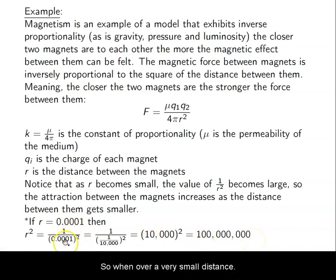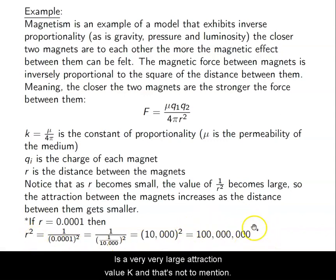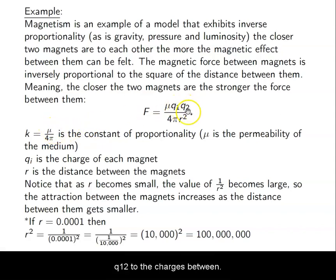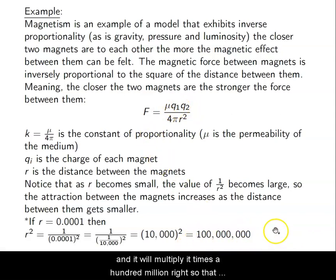So 1 over a very small distance squared is a very, very large attraction value. And that's not to mention including the values of the proportionality constant or the q1, q2, the charges between them. But having a very small number on here will take whatever this k is and whatever this q1 times q2 is, and it will multiply it times 100 million. So that will be a very, very large value of attractive force.